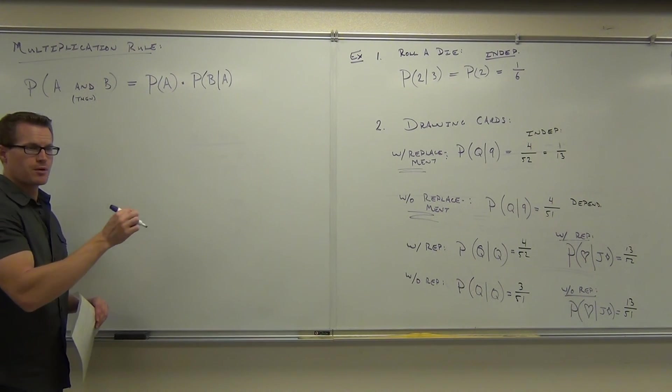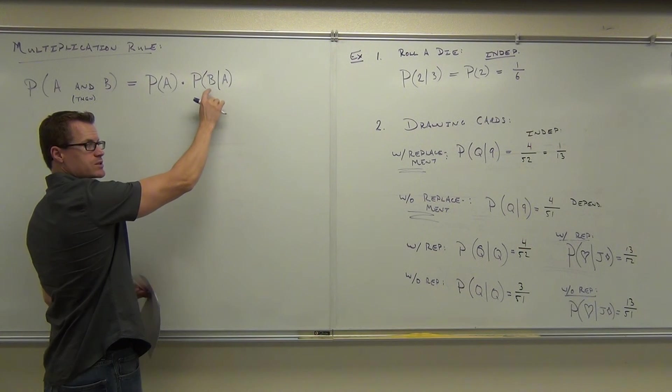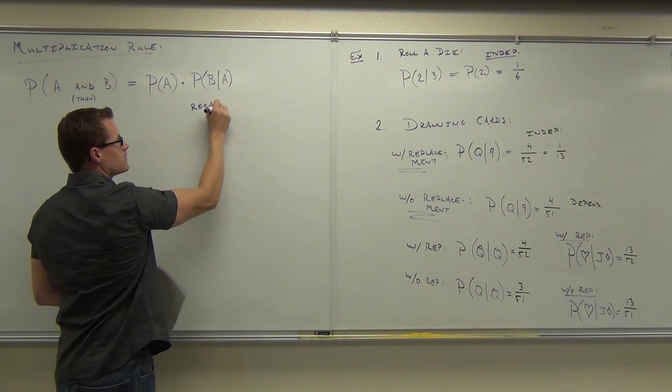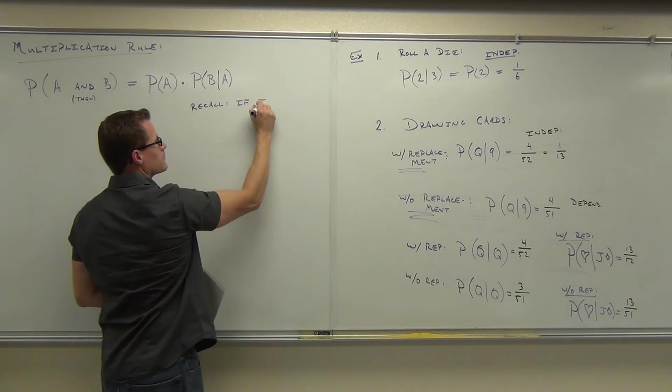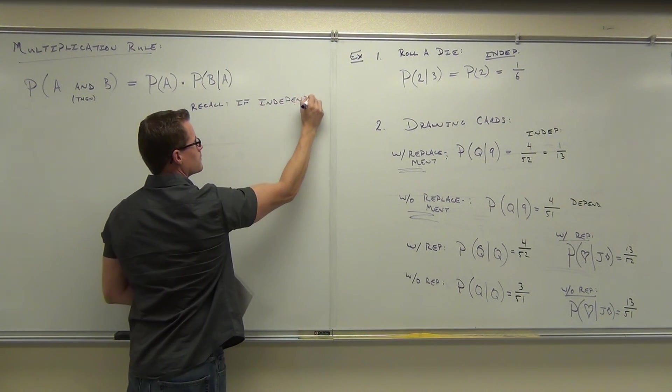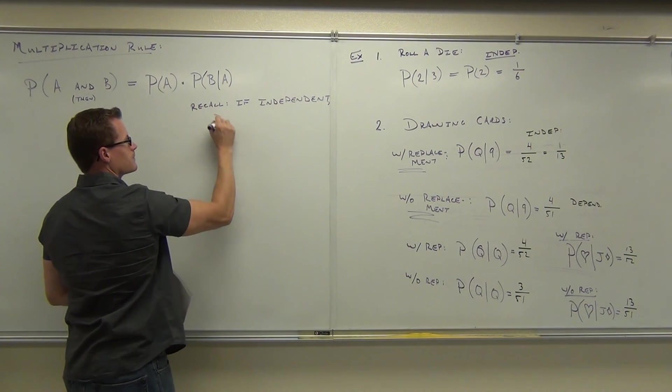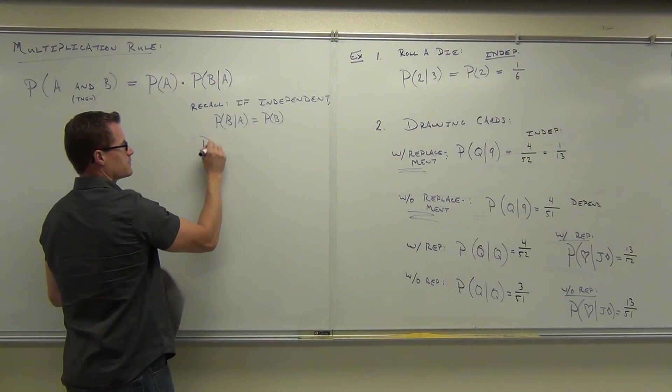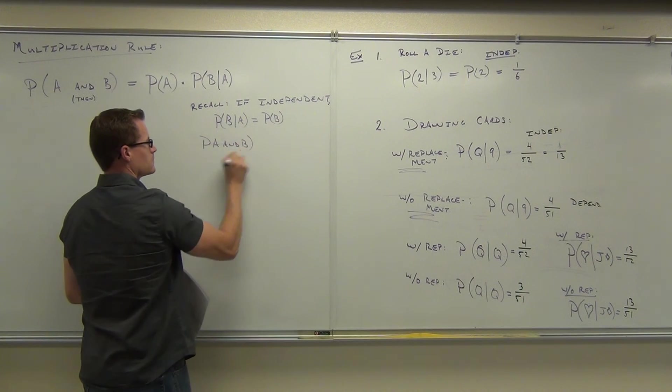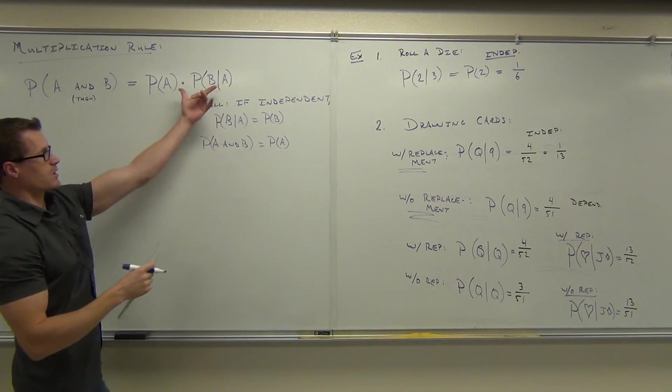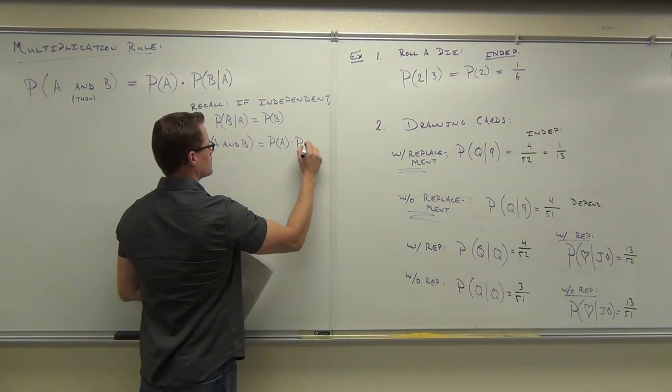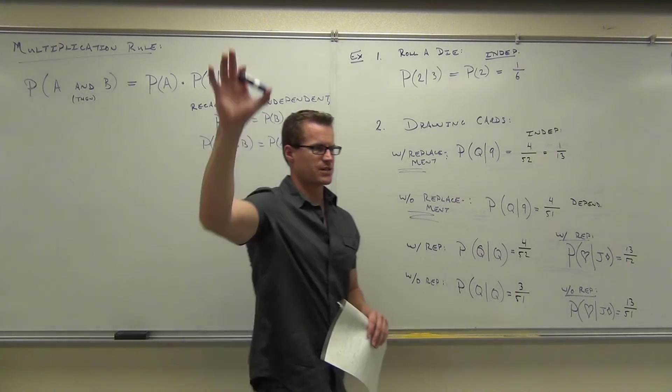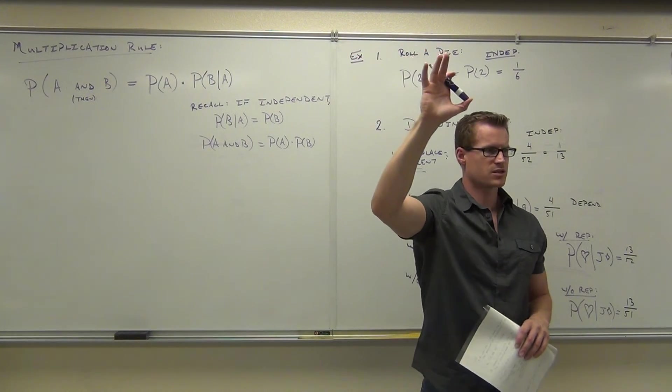But remember, remember, if these two things are independent, what's this equal to? So that, yeah. So, but remember, if independent, probability of B given A equals the probability of B. So, then this probability would simply equal the probability of A times, well, here, it would be the probability of B. I need you to check that on the board and raise your hand if that makes sense to you, why we're getting two similar things here.